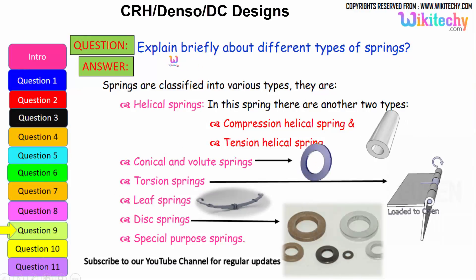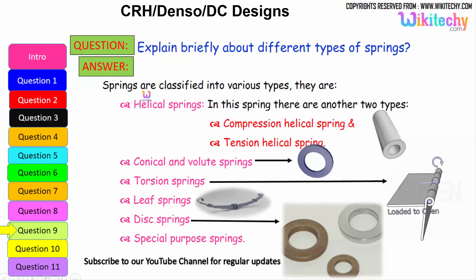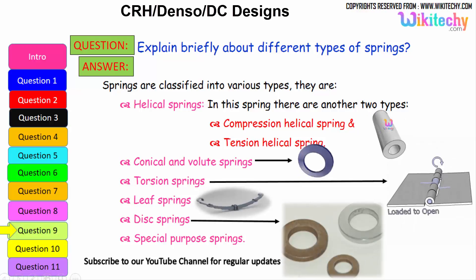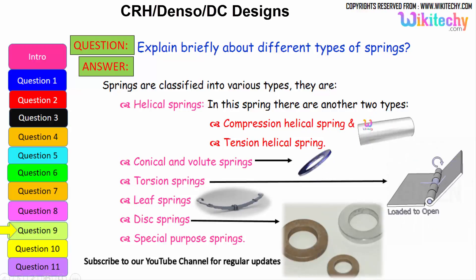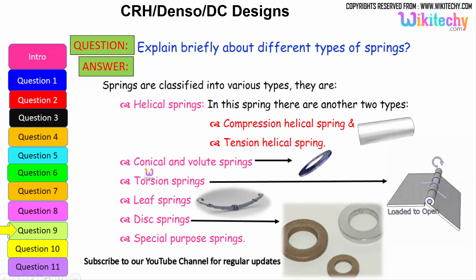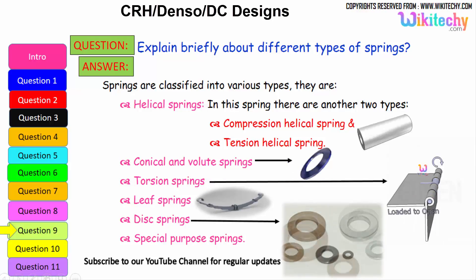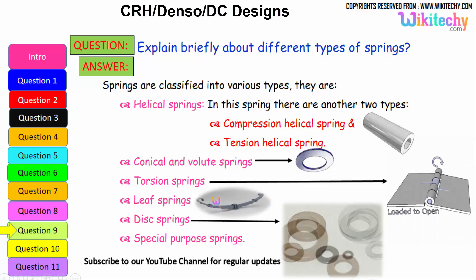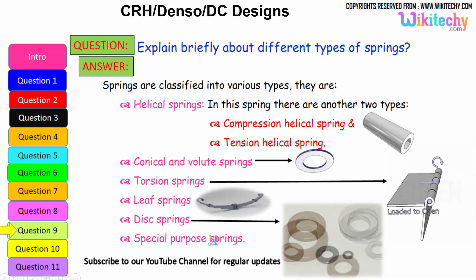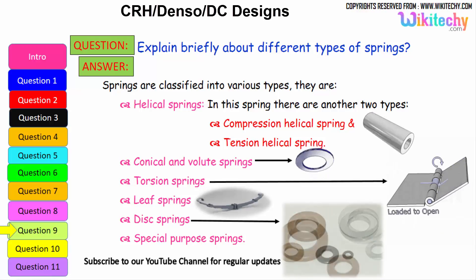Types of springs: springs are classified into various types — helical springs (which include compression helical springs and tension helical springs), conical/volute springs, torsion springs, leaf springs, disk springs, and special purpose springs.